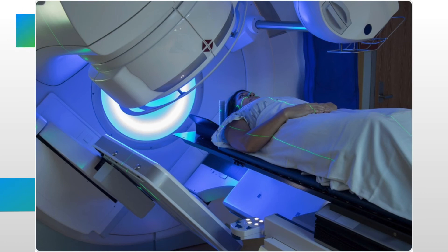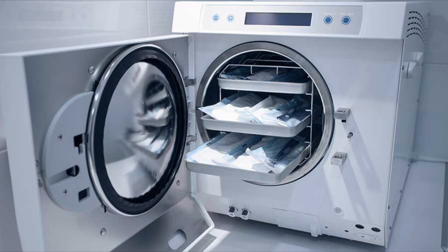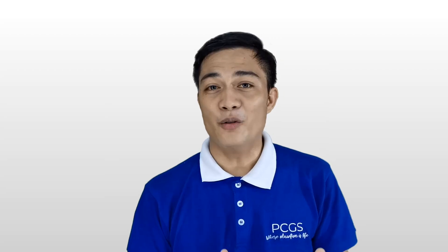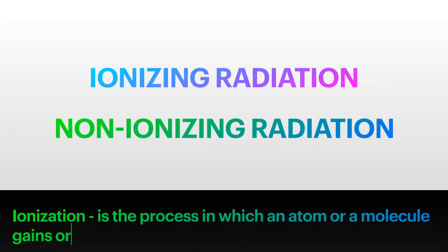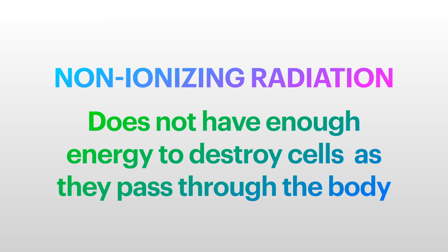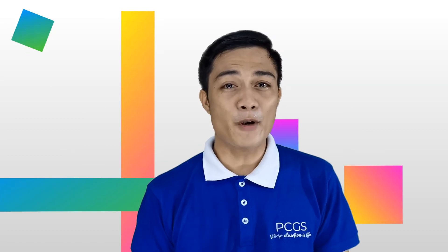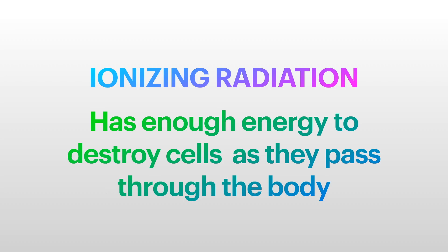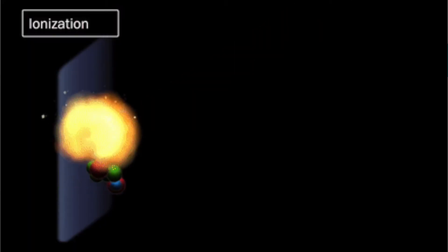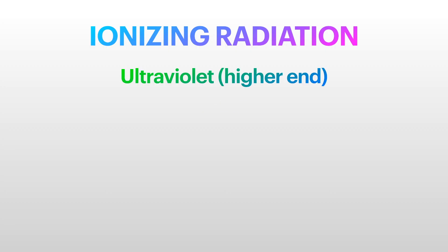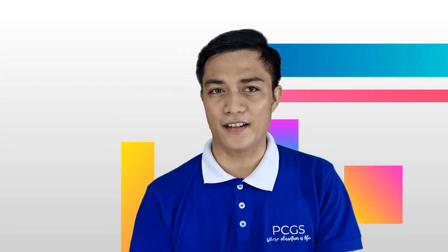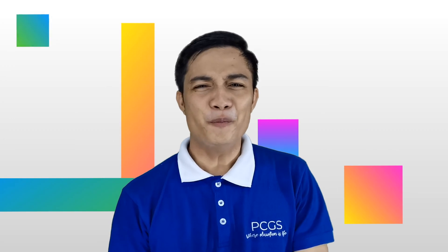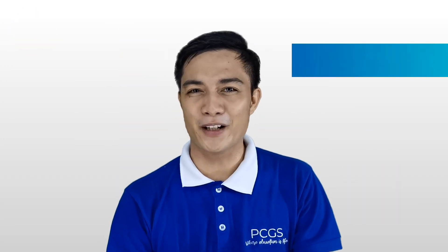Gamma rays are used in radiotherapy to treat cancer patients and can also be used to sterilize food and equipment. These EM waves can either be ionizing or non-ionizing. Non-ionizing radiation does not pose a significant threat in terms of destroying cells in your body — visible light and waves with longer wavelengths are considered non-ionizing. Ionizing radiation may cause cell destruction, so you are not advised to be exposed to it for longer periods of time. Most parts of UV, X-ray, and gamma rays are considered ionizing. Hope you understood the interesting facts about the entire EM wave spectrum and their uses.